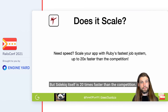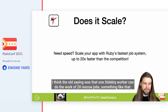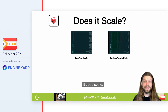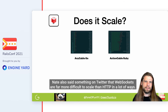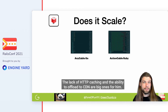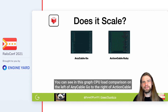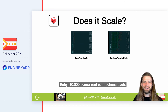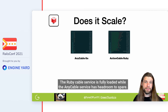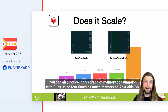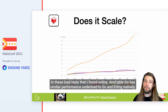Sidekiq itself is 20 times faster than the competition — one Sidekiq worker can do the work of 20 Resque jobs. Nate also said that WebSockets are far more difficult to scale than HTTP in a lot of ways, with the lack of HTTP caching and the ability to offload to CDN being big ones. You can see in this graph the CPU load comparison of AnyCable Go to Action Cable Ruby with 10,000 concurrent connections each — the Ruby cable service is fully loaded while the AnyCable service has headroom to spare. AnyCable Go also uses four times less memory than Ruby, and in load tests has similar performance to Go and Erlang natively.